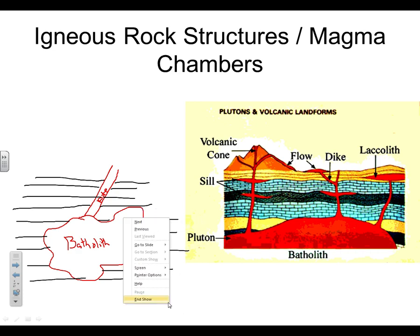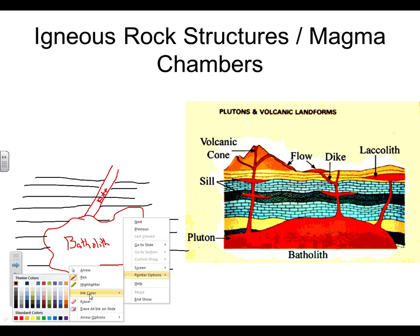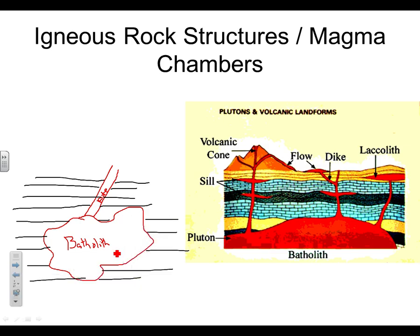Next I'm going to draw a laccolith. I'll put it at the top of my dike. For the laccolith, I'm going to give it a flat bottom, and make the top bend up, kind of curve up. The laccolith is a pretty large rock structure, our second biggest. Label it laccolith, spelled L-A-C-C-O-L-I-T-H.